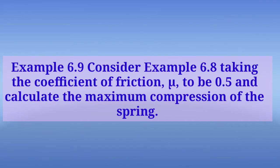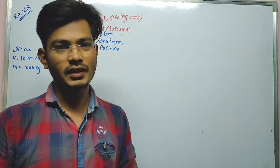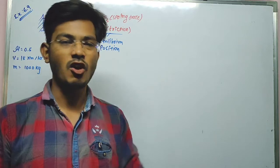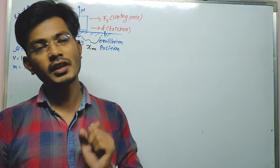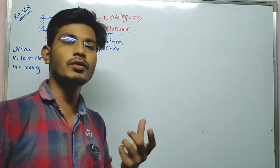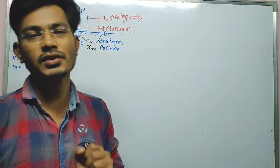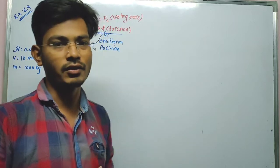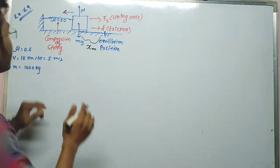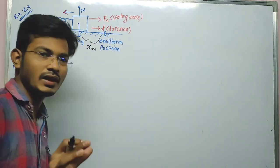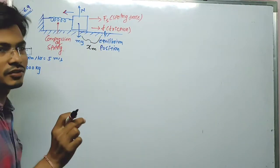Example 6.9: Consider Example 6.8, taking the coefficient of friction mu to be 0.5, and calculate the maximum compression of the spring. In this example we have to consider that 6.8 is the same problem, but with mu = 0.5 added. We have to find the maximum compression xm, considering friction, whereas in the previous example we discussed the spring and car without friction.